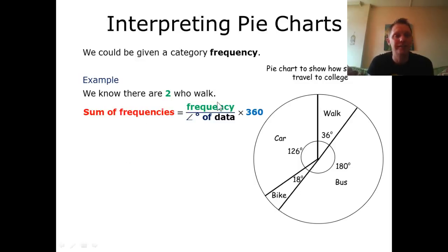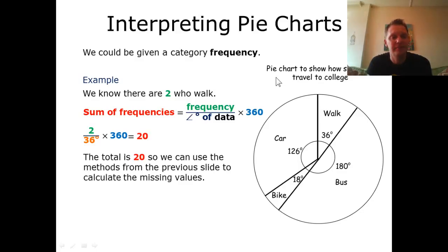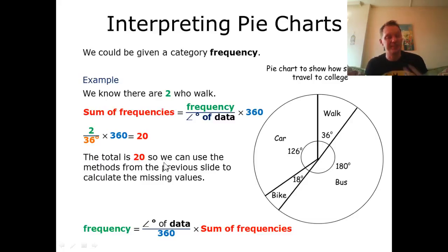So my sum of frequencies is going to equal my frequency divided by the degrees of data times by 360. So 2 divided by 36 times by 360, that gives me 20. So 20 people in total were asked, in which case I would use the exact same process as what we just did on the table.